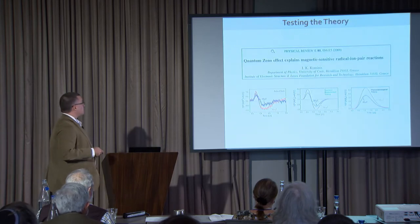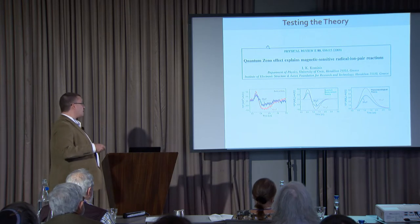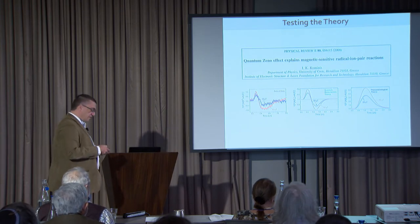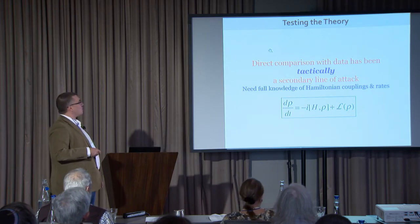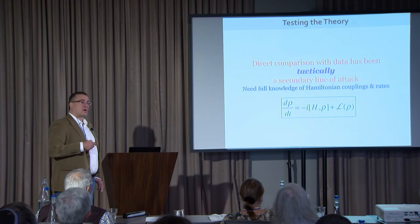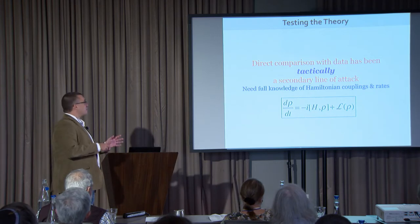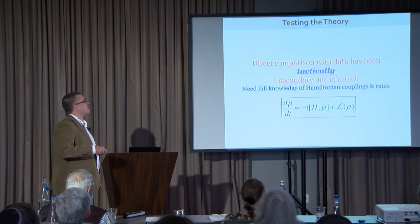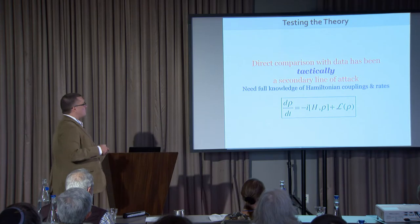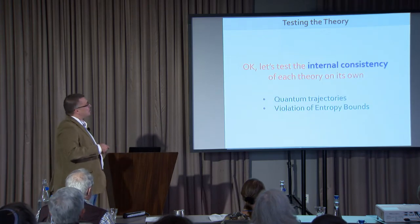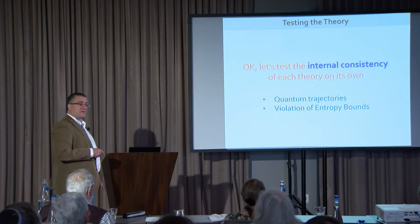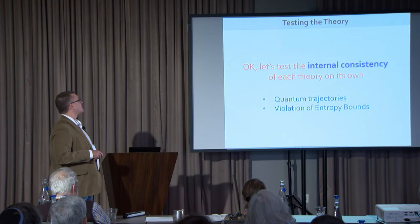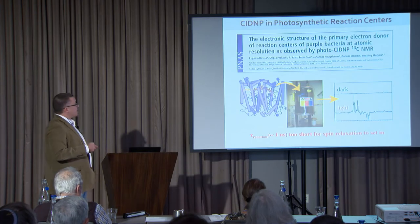We tested the theory by comparing with data; this was done in the first paper in 2009 using Oxford data. However, direct comparison with data has been tactically a secondary line of attack, because the discussion can be diverted into debating whether we understand the Hamiltonian couplings — but we don't care about that; we care about the form of the open system dynamics in the second term. So we had to find a different strategy: test the internal consistency of each theory — the old and the new — on its own. We did so in two ways: looking at quantum trajectories and then at the violation of entropy bounds.